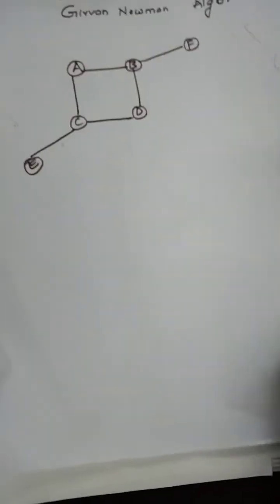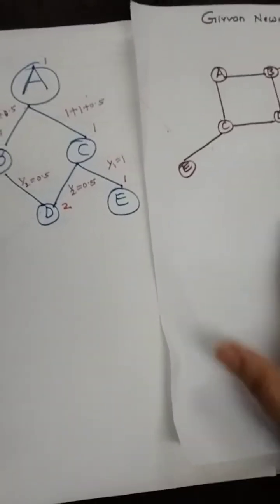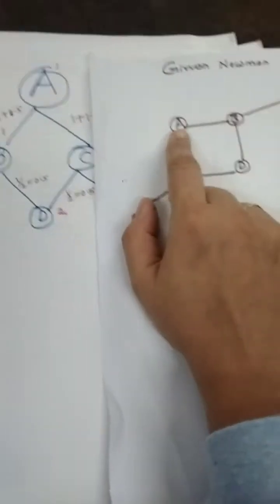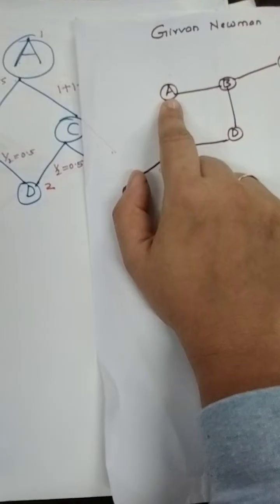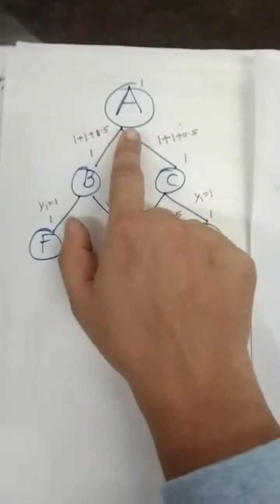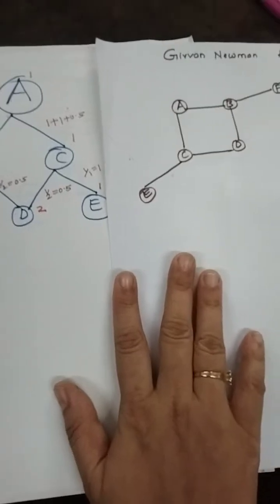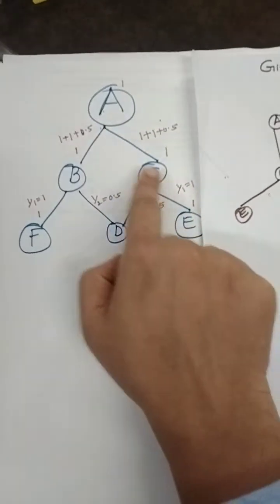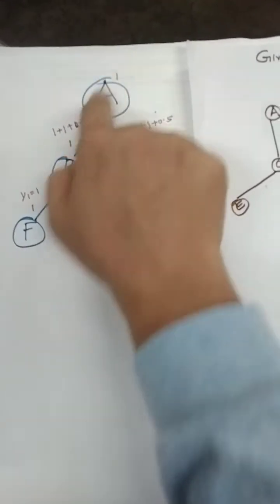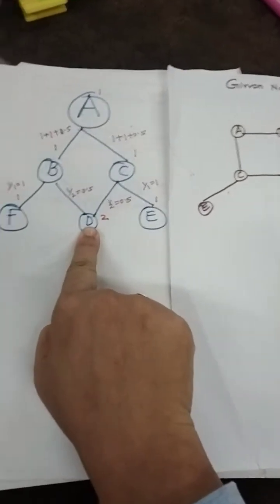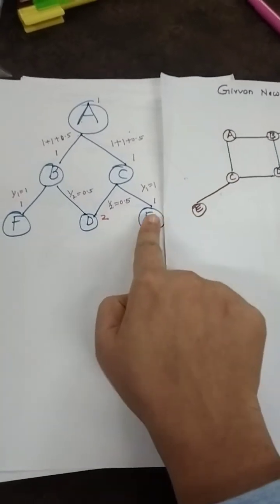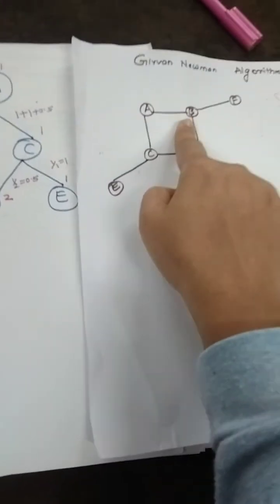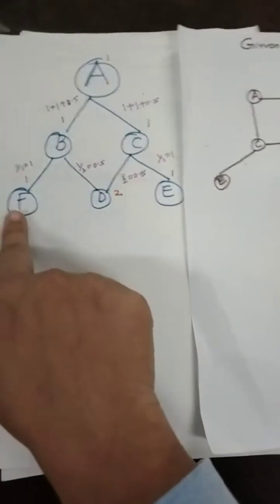Now let us find out how to calculate betweenness centrality. We start with node A and consider each node to find edge weights. Starting with node A, you form a tree-like structure. Node A is connected to node B as well as node C. Similarly, B and C are both connected to D. From C you have one more edge to node E, and from B you have one more edge to node F.